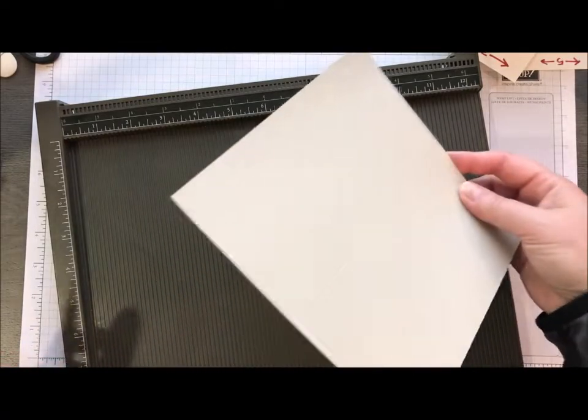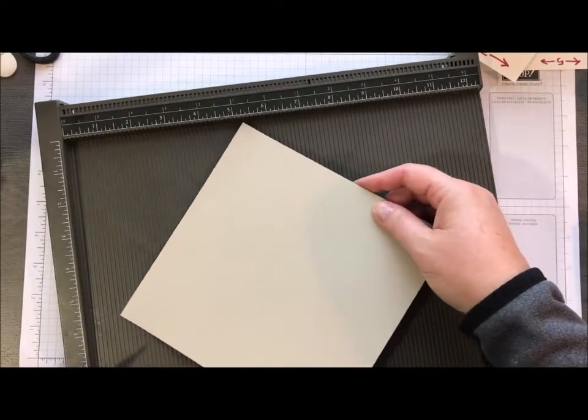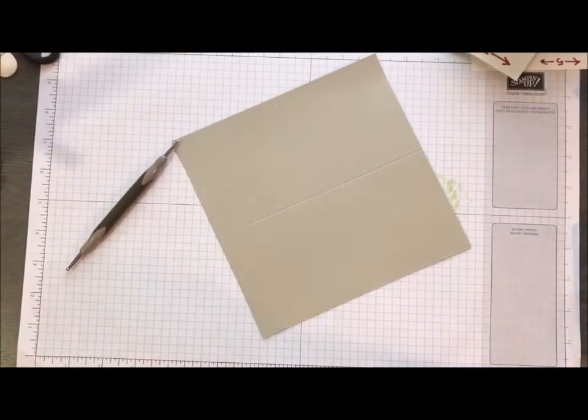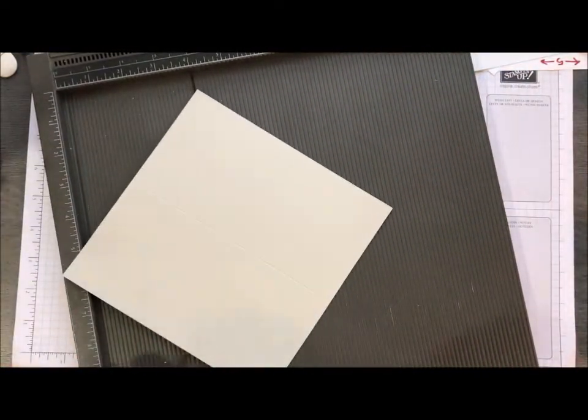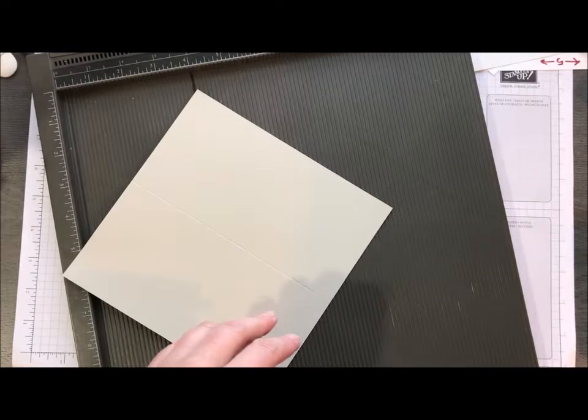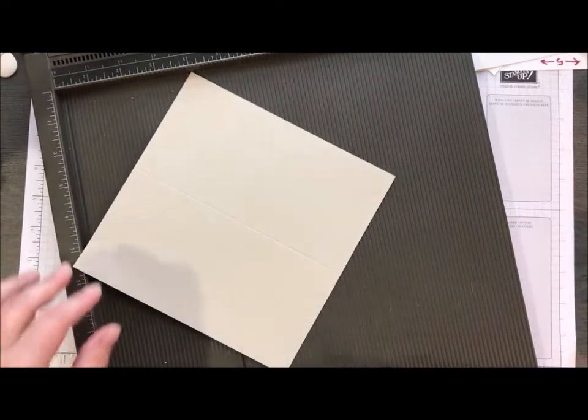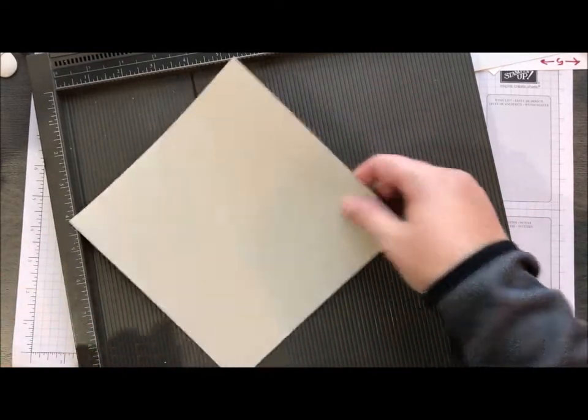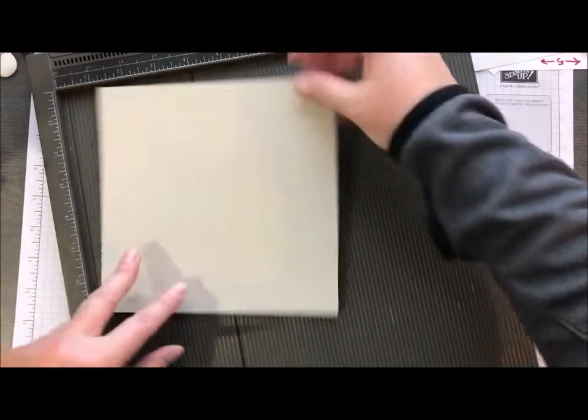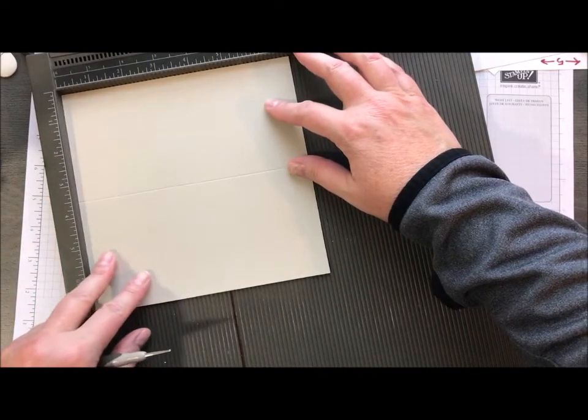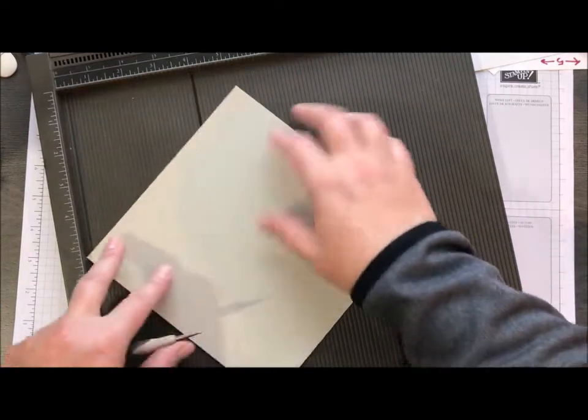And then I'm going to do, I've got the wrong tool here. Let me switch mine out. Hold on one second. I have this one specially marked so that I can do diagonal scoring.